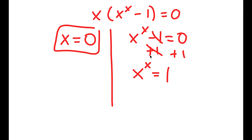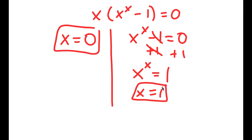Because x has to be the same number, what number to the power of itself is equal to 1? That's going to be 1, because 1 to the power of 1 is equal to itself. So x is equal to 1. There's no other number that when you take the power of itself is going to equal 1, meaning x equals 1 is the only solution to this equation.